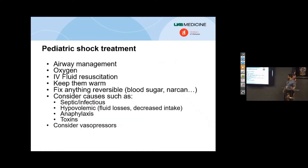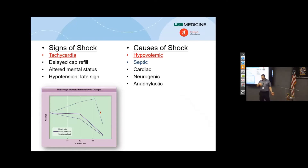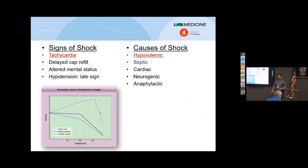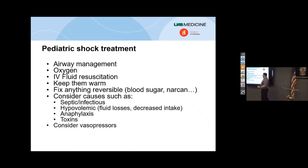Causes of shock: number one by far is hypovolemic shock — and not just from trauma. Kids have fewer fluid reserves and can actually vomit, fever, and have diarrhea themselves into a hypovolemic shock state literally from dehydration. The next most common is septic shock from overwhelming infection. What do those two kinds of shock have in common? They're fluid-responsive forms of shock — we treat them with IV fluids. And the good news is that you can do that just as well as I can. Pediatric shock treatment is actually really simple.